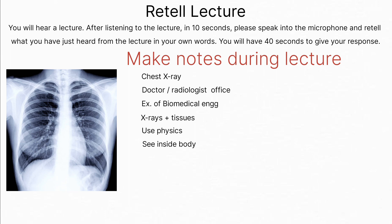You'll recognize some parts of the image. You can see the ribcage here. The bones you can see. The heart is the large, bright object down here. If you have good eyesight from the distance, you can see the vessels leading out of the heart and into the lungs. And the lungs are darker spaces within the ribcage.